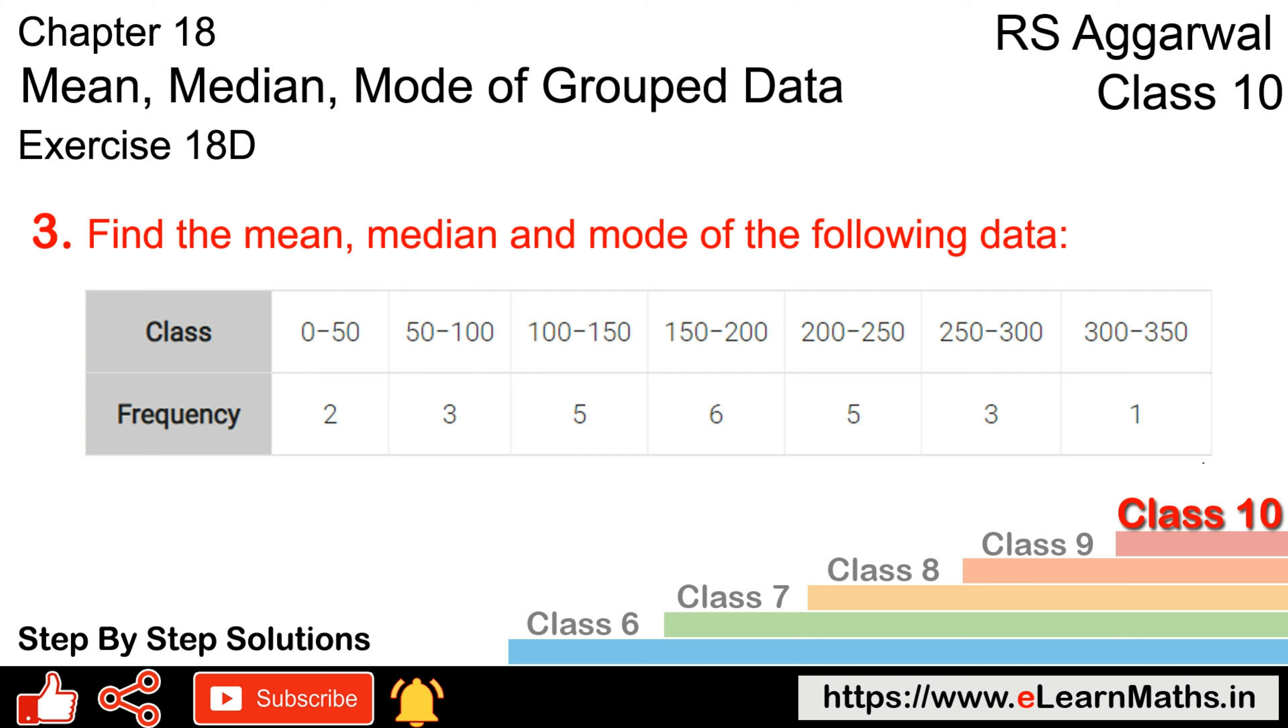Let's do question number third of exercise 18D, that is mean, median and mode of grouped data. Question number third is find the mean, median and mode of the following data. We have to take the mean, median and mode.